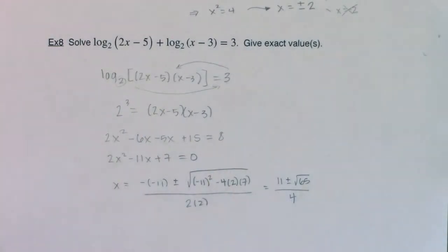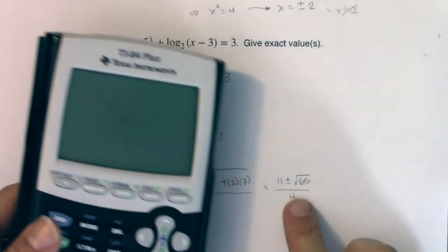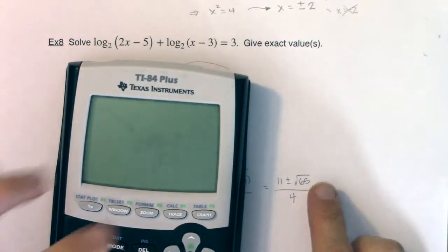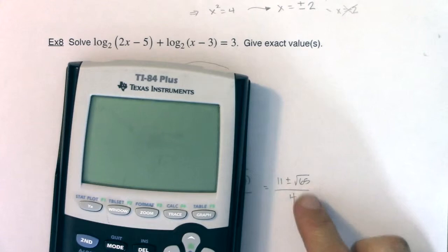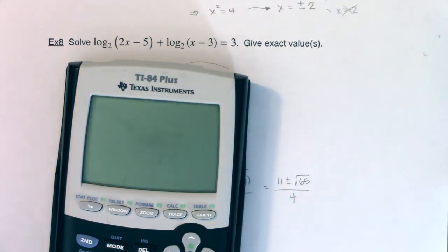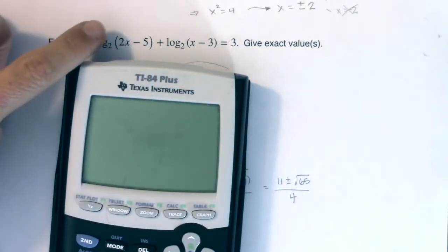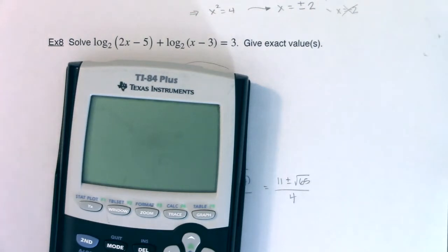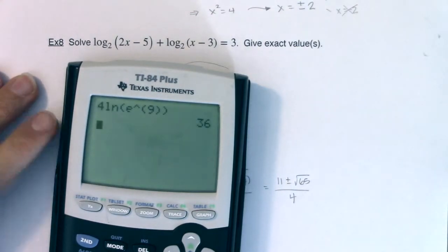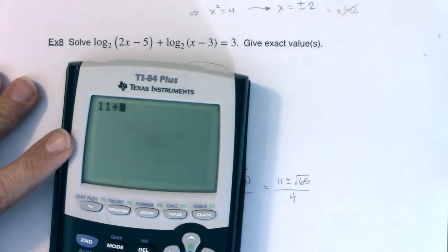I think that's pretty much as far as I can go without my calculator, so let me go grab my calculator and let's see what these two numbers are equal to, because these are potentially my two solutions. It says give exact value, so I would leave it like this, but I do need to check that neither of these answers make my arguments 0 or negative.